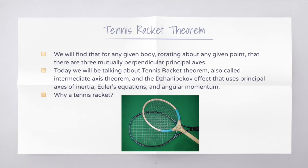We will find that for a given body rotating about any given point, there are three mutually perpendicular principal axes. Today, I'm going to introduce the Tennis Racket Theorem, also called the Intermediate Axis Theorem and the Janabekov Effect, that uses many concepts from chapter 10, such as principal axes of inertia, Euler's equations, and angular momentum.